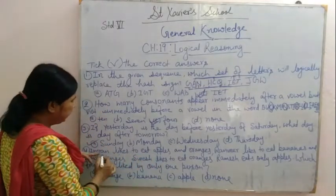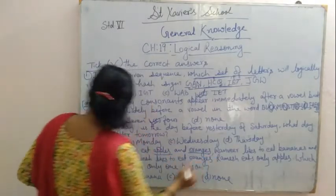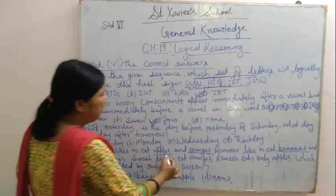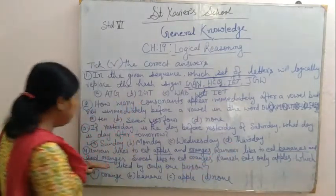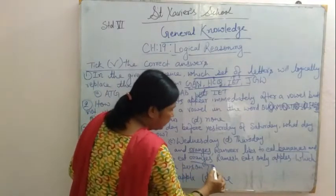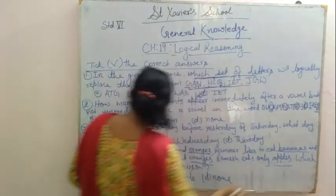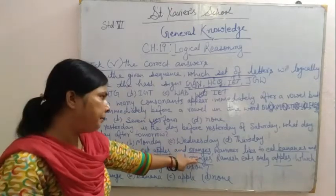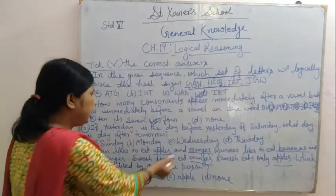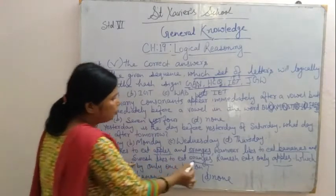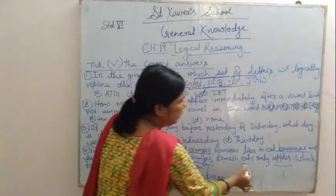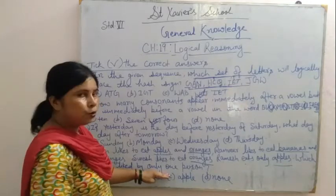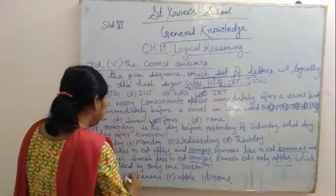Now the fourth question. Imran likes to eat apples and oranges. Ranbir likes to eat bananas and oranges. Suris likes to eat oranges. Which fruit is liked by only one person? Imran has apples and oranges, Ranbir has bananas and oranges — orange appears for multiple people, so it's not the answer. Apple also appears for Imran. Banana is liked only by Ranbir. So the answer is banana.